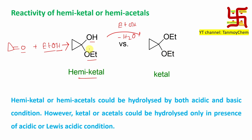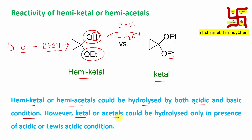This hemiketal is nothing but a hydroxy group (alcohol) and an ether part. Ketals are completely ether. That's why this hemiketal — or hemiacetal if you take an aldehyde — can be hydrolyzed under both acidic and basic conditions. If you give acid, the ether can react and hydrolysis is possible. If you give base, the base can abstract the proton and further reaction is possible. But ketal or acetal can only be hydrolyzed under acidic or Lewis acidic conditions, because there is no proton and no basic side — the oxygen lone pair coordinates with H⁺ or Lewis acid to start the reaction.